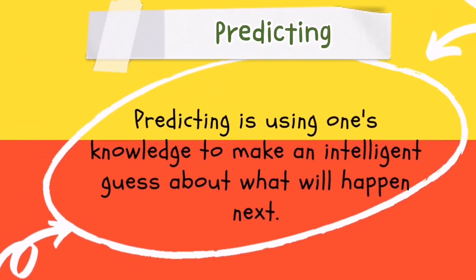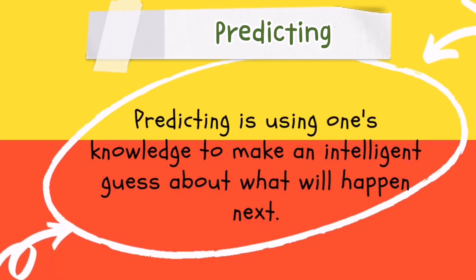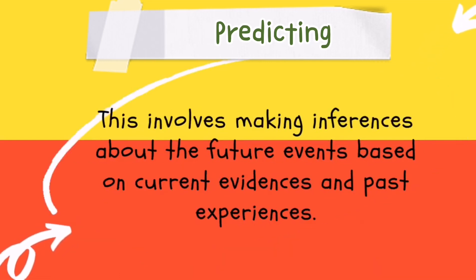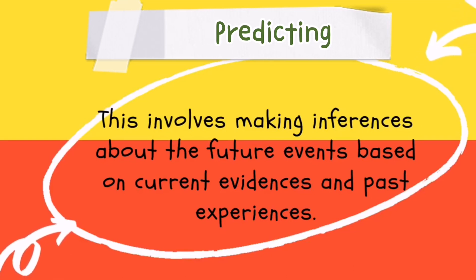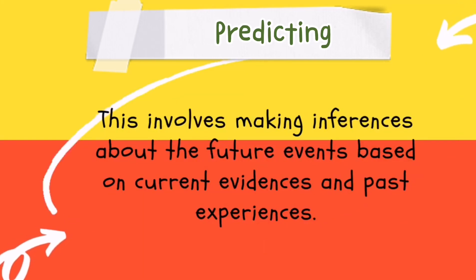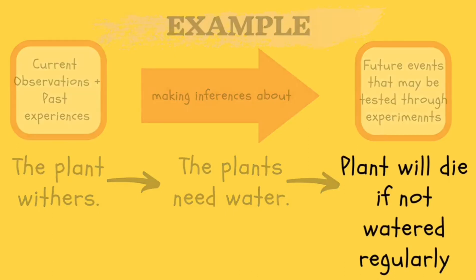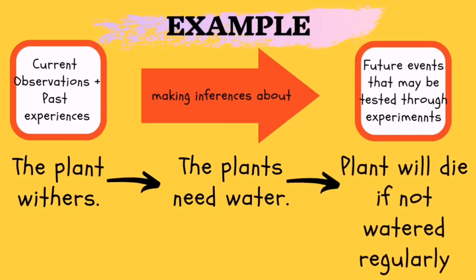Predicting is using one's knowledge to make an intelligent guess about what will happen next. Predicting involves making inferences about future events based on current evidence and past experiences. As an example, based on your current or past experiences, the plant withers. Based on your inference, the plant needs water. So, as a prediction, the plant will die if it is not watered regularly.